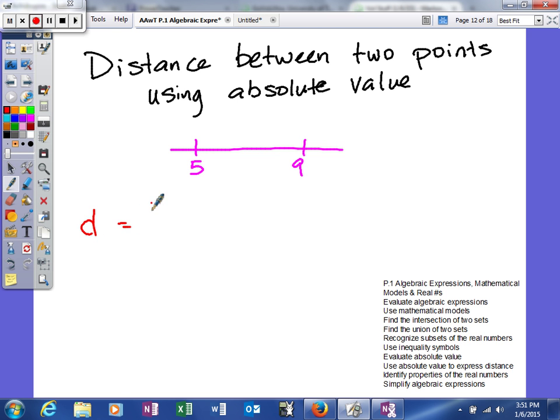The distance we could do is you could say A minus B and take the absolute value of that. Or, you could also do the distance to be B minus A.